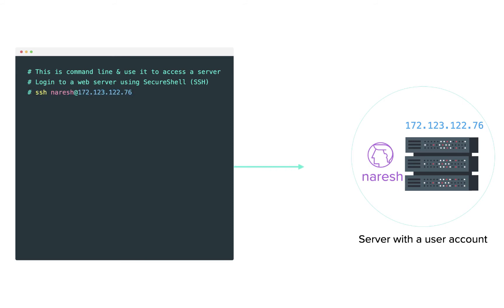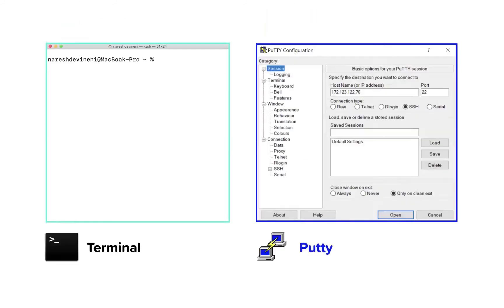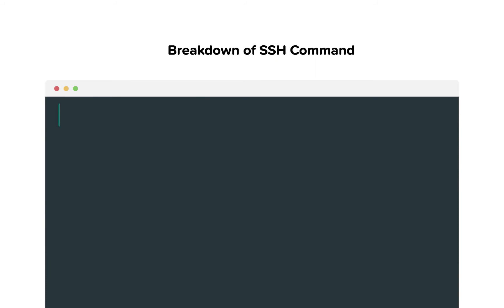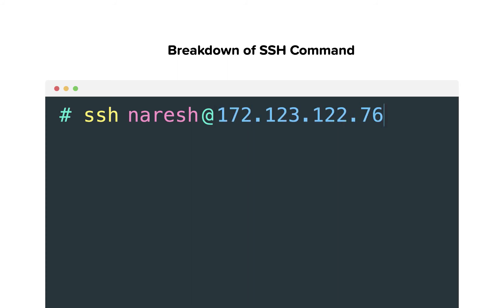Just like Liquid Web, your web host will provide SSH credentials for accessing your web server. If you cannot find them, ask the support team from your web hosting company. If you're on a Mac, you can use the Terminal as the SSH client. If you're on Windows, you should use PuTTY. Here is the breakdown of the SSH command: SSH [user account]@[host address], where the host address could be the IP address of the server or the domain name.